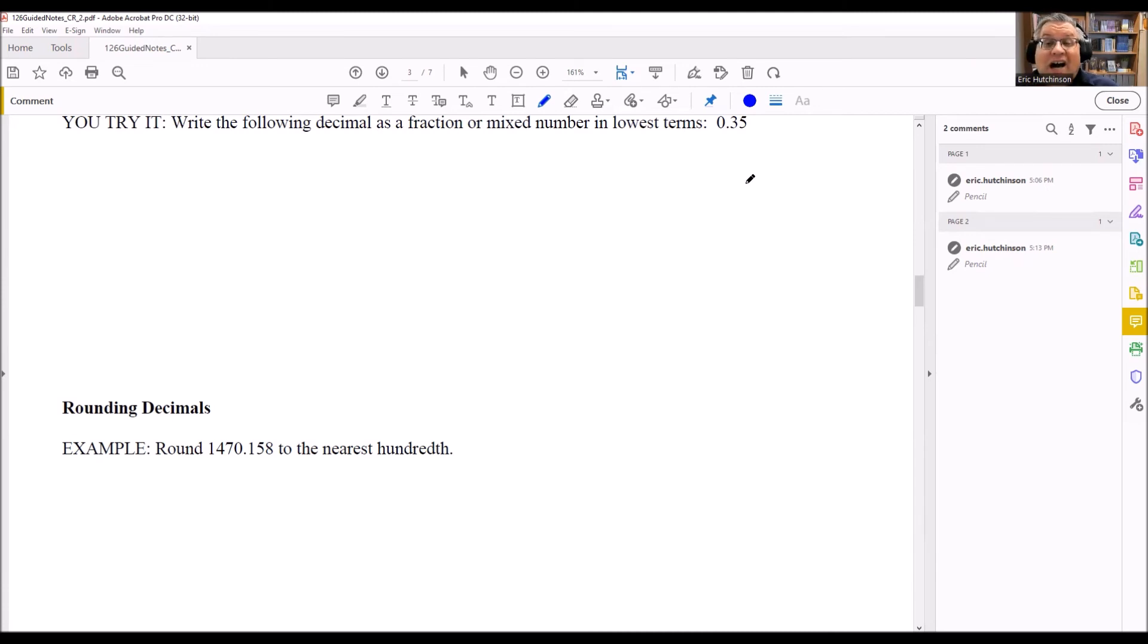We will write the following decimal as a fraction or mixed number in lowest terms, 0.35. So again, there's two numbers after that. Two numbers means that would be hundredths. So I have 35 over 100.